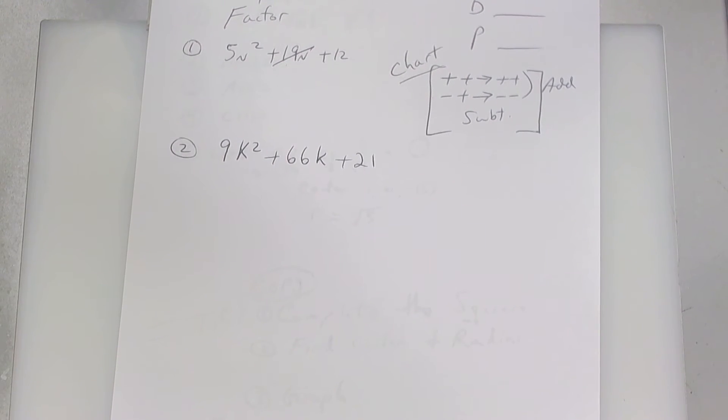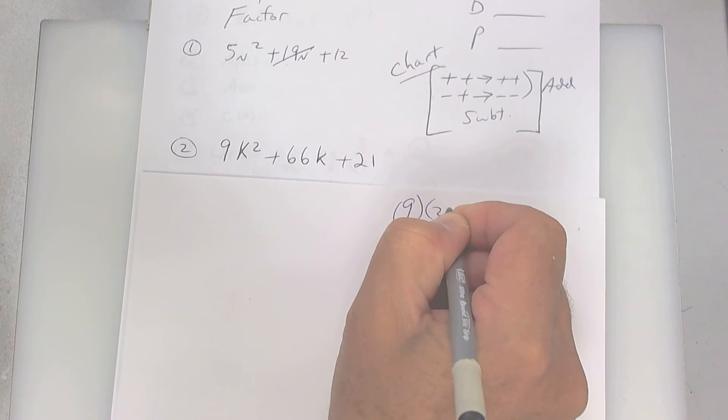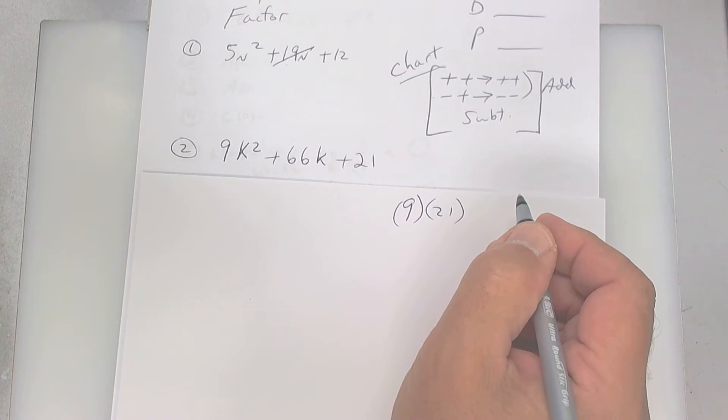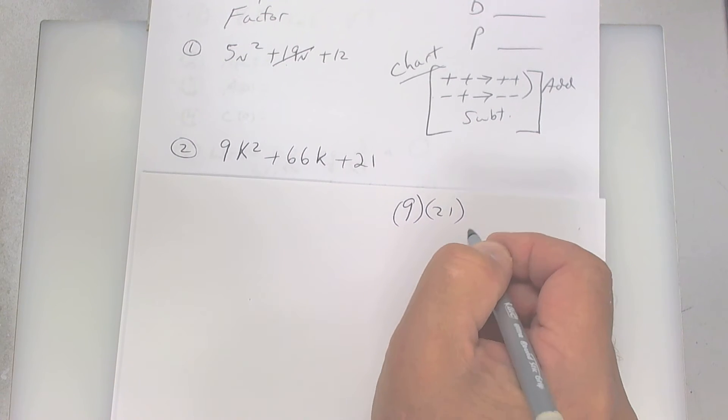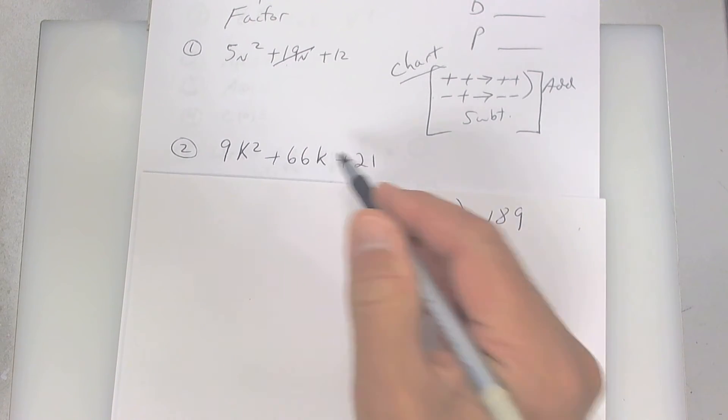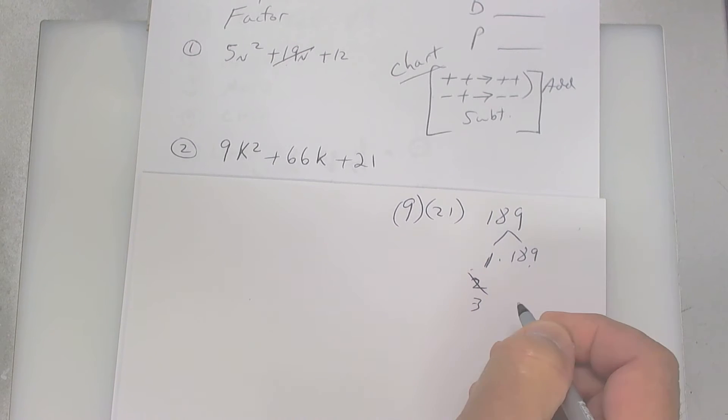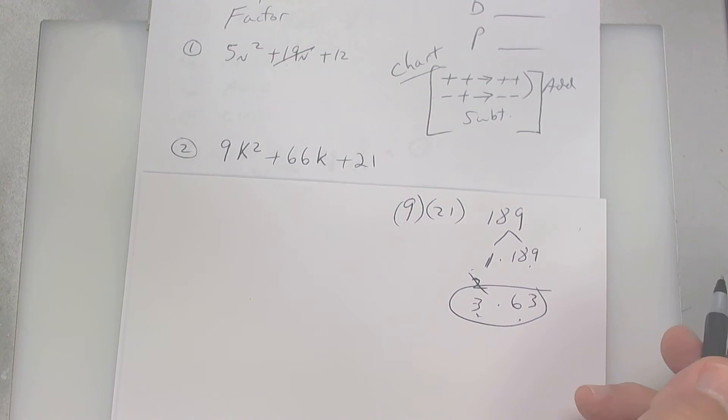Last one here looks like a long one. You got to do 9 times 21, and both of these are pluses, so you're going to be adding. 21 times 9 is going to give us 189. We're looking for something that's going to add to be that. So let's start breaking it up. One times 189 adds up to 190, we don't want that one. I don't think two works. Let's try 3, so 189 divided by 3 is going to give you 63. And that's it, you add that up you get 66.